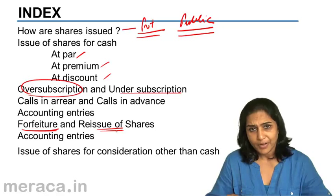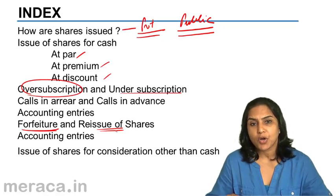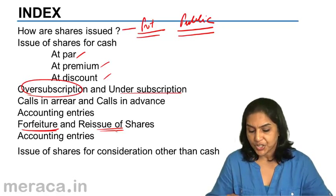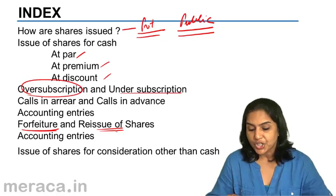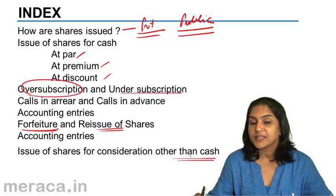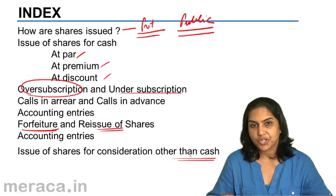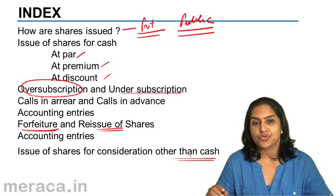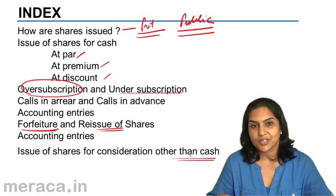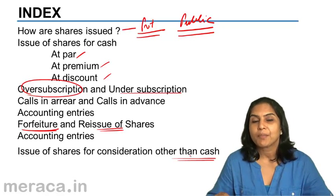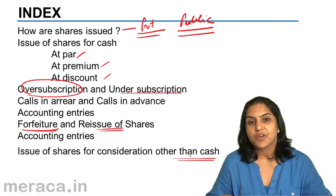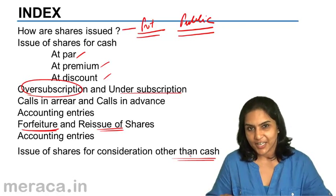We also cover another small section called issue of shares for consideration other than cash — when we issue shares to promoters, to vendors, etc., not for cash, but for some other kind of consideration.